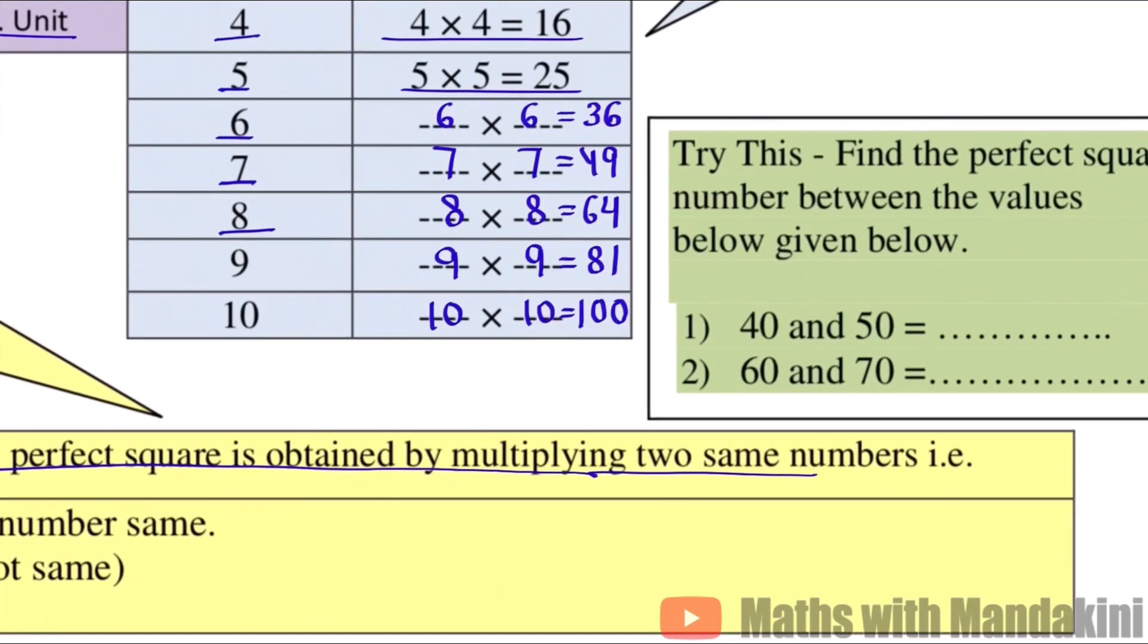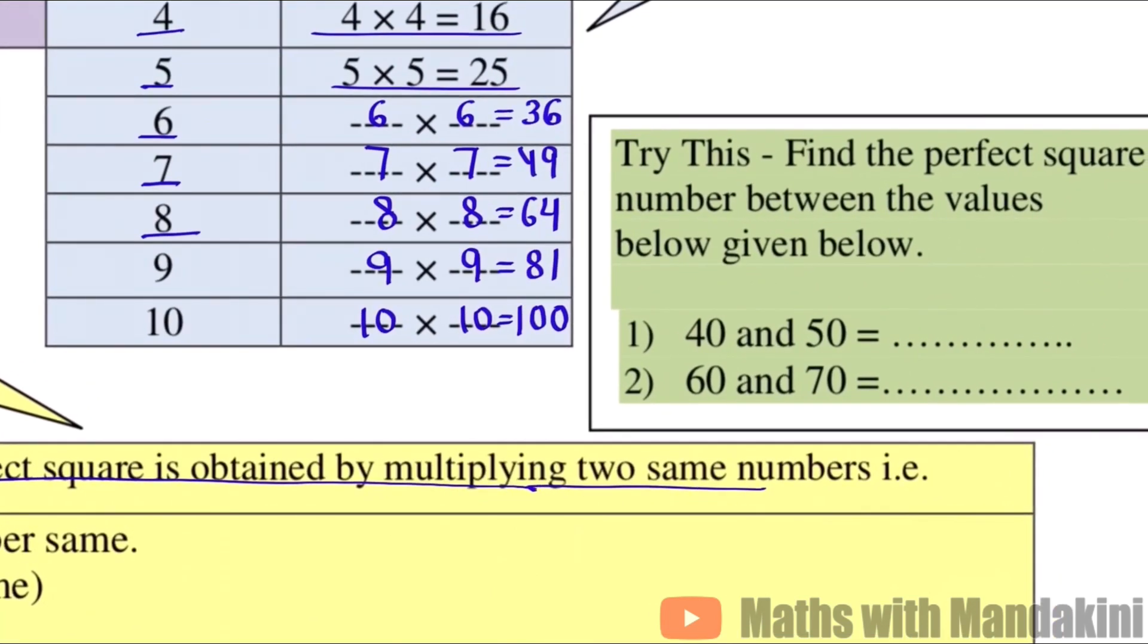Now we have to try this. We have to find out which number is a perfect square number between the numbers given below: 40 and 50. So we have to use our table. Practice more questions like this from your NCERT book. We will see you in another video. Keep practicing and enjoy maths. Thank you.